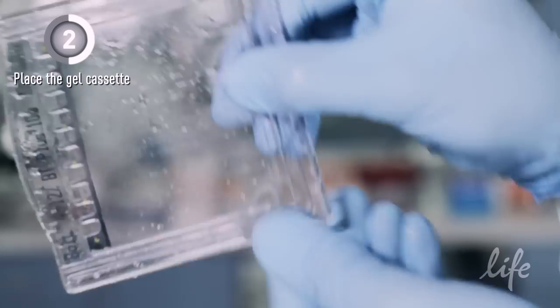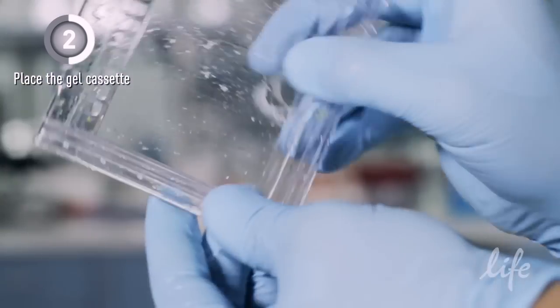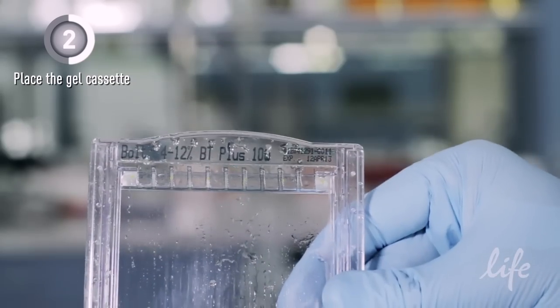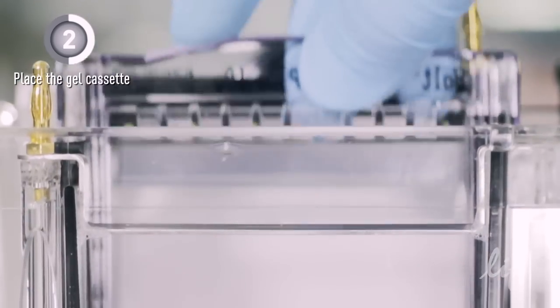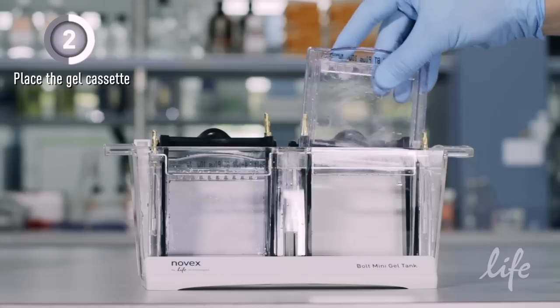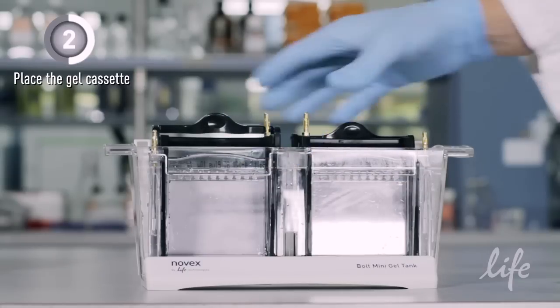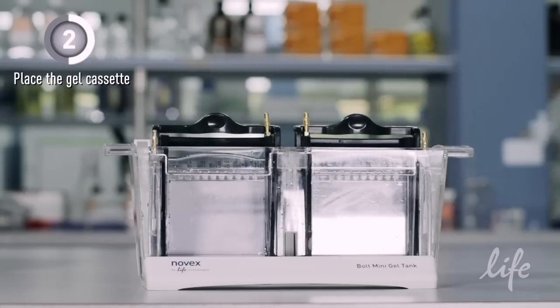Invert the gel and shake to remove the buffer. Now you can place the gel cassettes into the clamps with the lower cassette side facing you. Secure the gel by closing the clamp. The lever should come to a stop and hold the gel firmly in place.